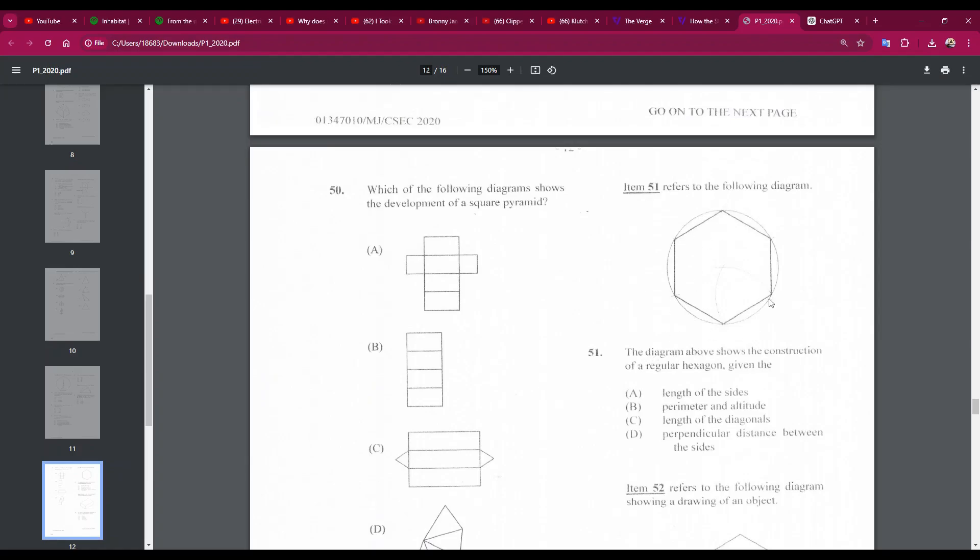Number 51 refers to this diagram. Which the diagram above shows the construction of a regular hexagon given the length of the sides. Okay, it's the length of the sides. I would say that they gave the circle and the length of the sides. Actually, anyway, the answer is A, right? They gave the length of the sides. So what they did, they used the length of the side as radius, and the ends of the line as centers drew two arcs where they intersected. Then, they used that as the center of the circle, and then they marked off the lengths of the other sides. Number 51A.